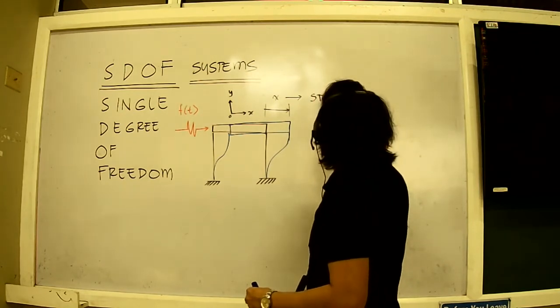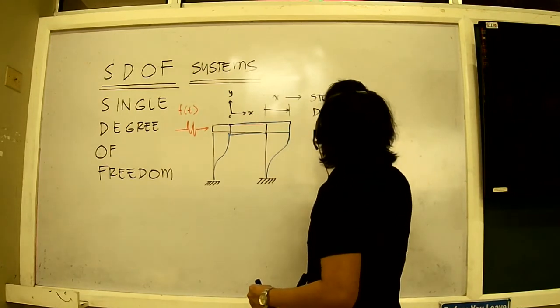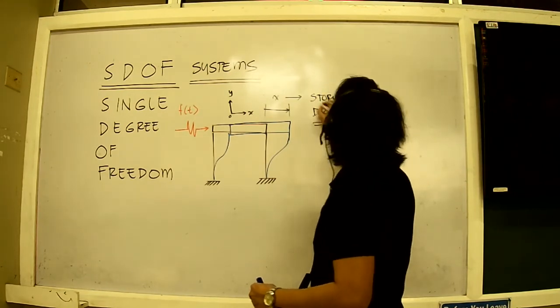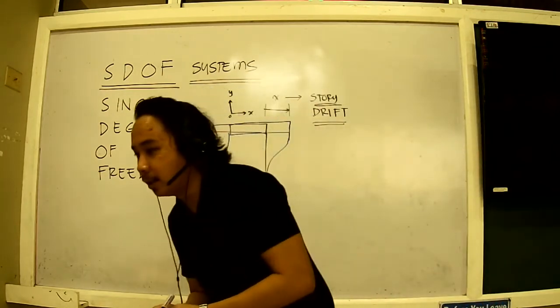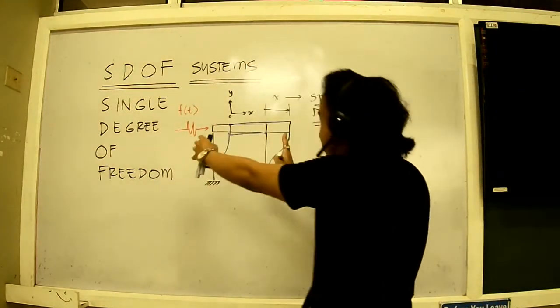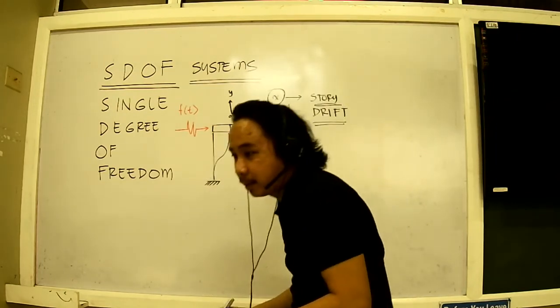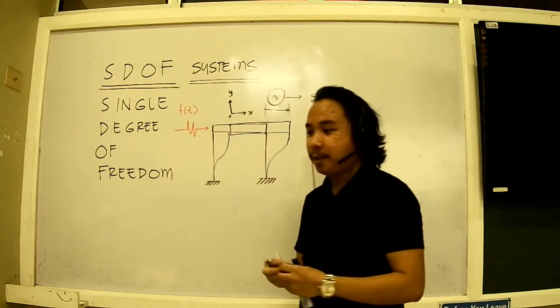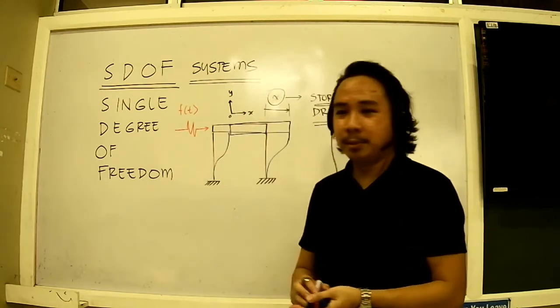Story drift will be further elaborated later on. Drift is the deformation from here to here, designated by the term X. So we will be discussing single degree of freedom systems.